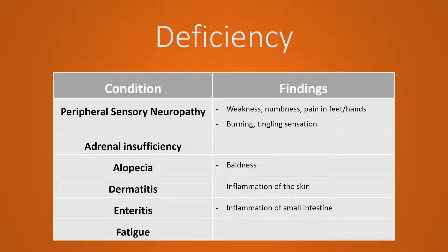I mentioned earlier that deficiencies in vitamin B5 are very rare because it's found in everything we eat, and because of that, conditions associated with B5 deficiency are pretty low yield for any test you take. Having said that, some common conditions you can find in the case of a deficiency would include peripheral sensory neuropathy, which presents with weakness, numbness, and tingling in both your upper and lower limbs, adrenal insufficiency, alopecia which is baldness, dermatitis, enteritis, and fatigue.